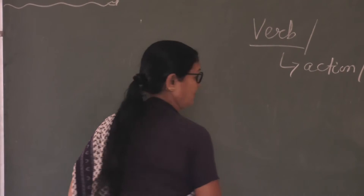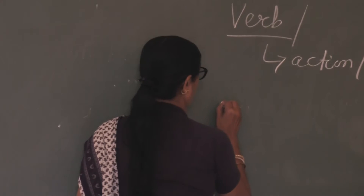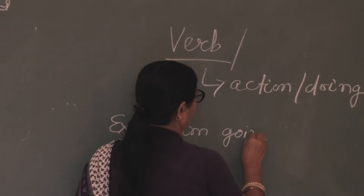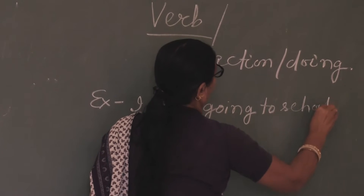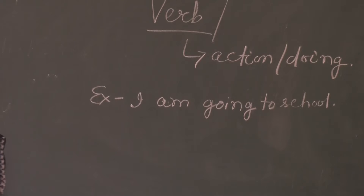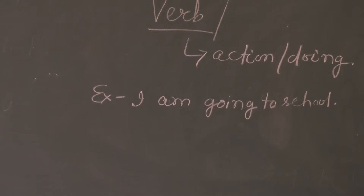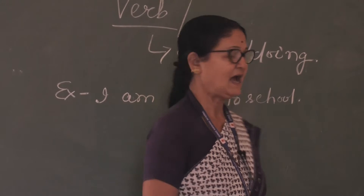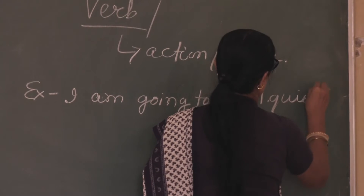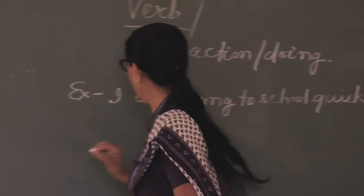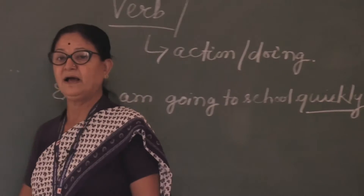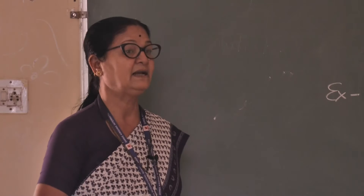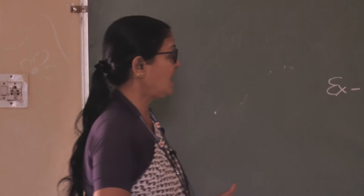Now I am giving you one example — you write it and I will see your copy. 'I am going to school.' Simple sentence. You can ask me how I am going — maybe very slow, maybe very quick, maybe very fast. I am adding one word: quickly. Here you see this word 'quickly.' How I am going? I am going to school quickly. This activity is elaborated — it tells more about how I am going.